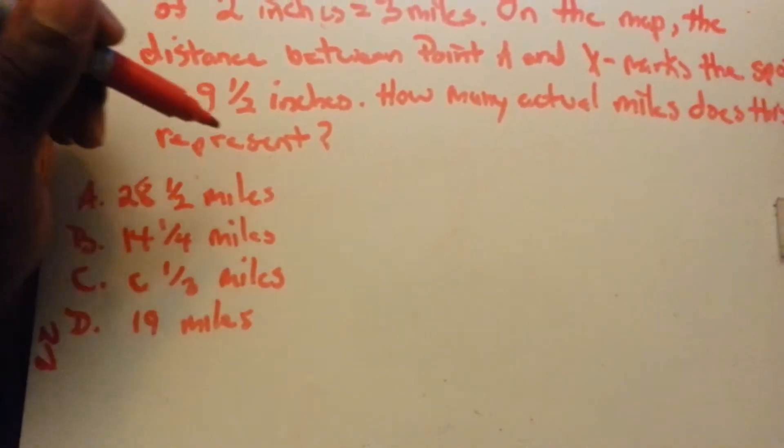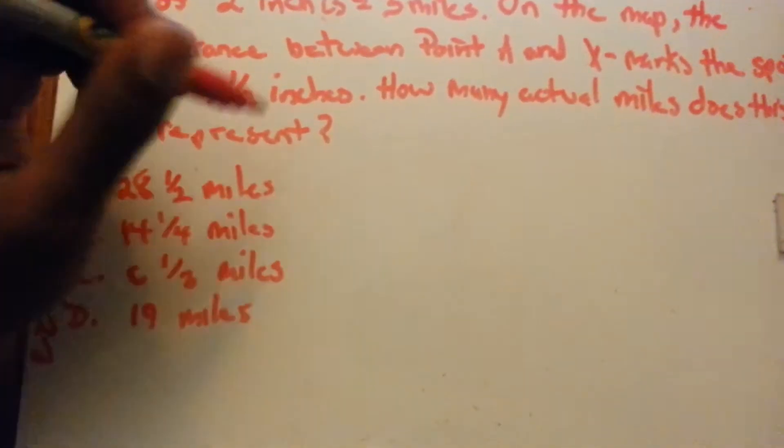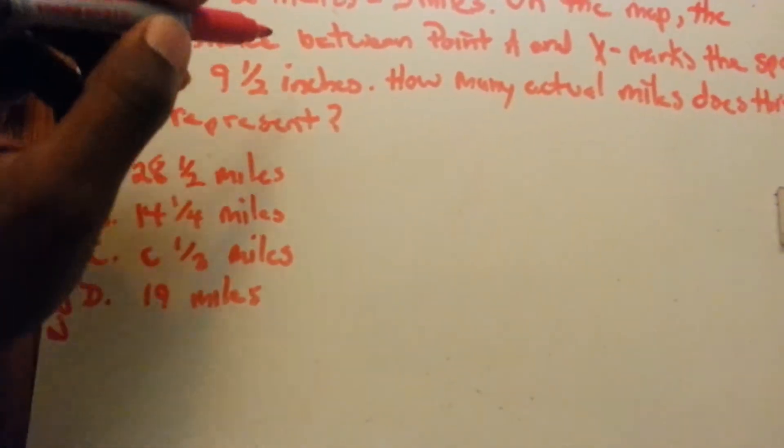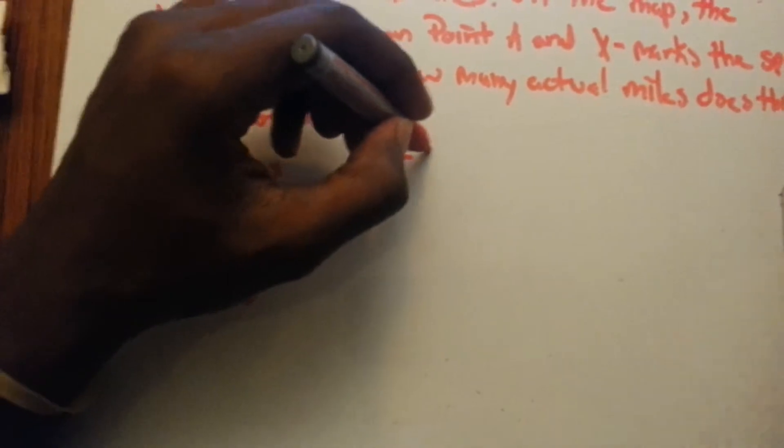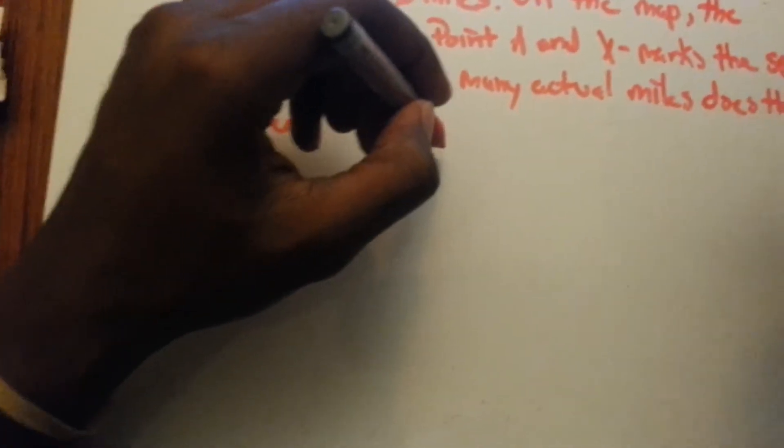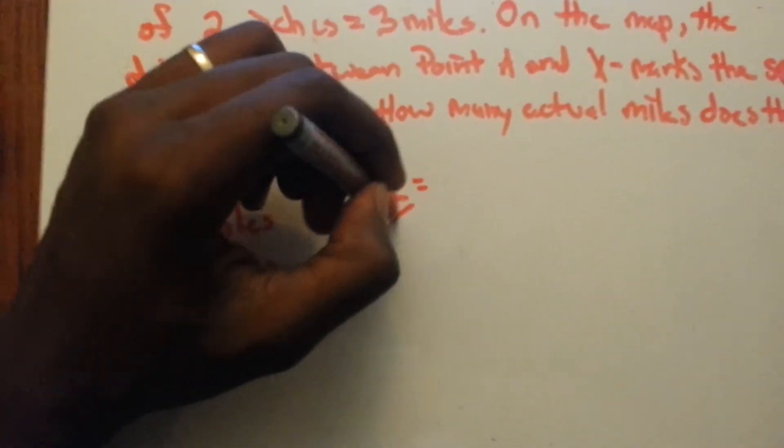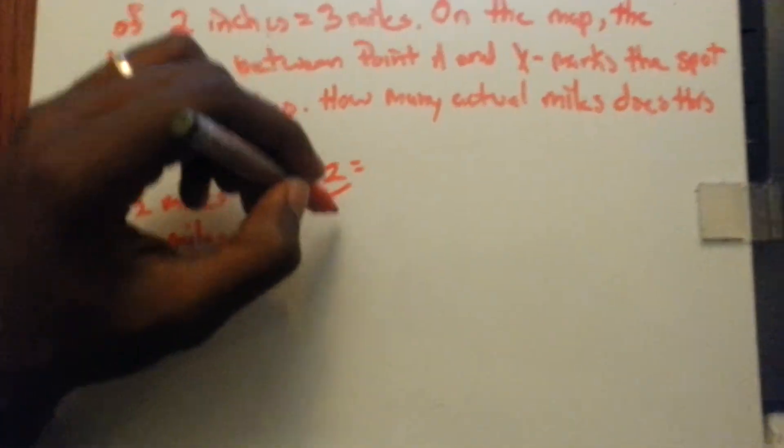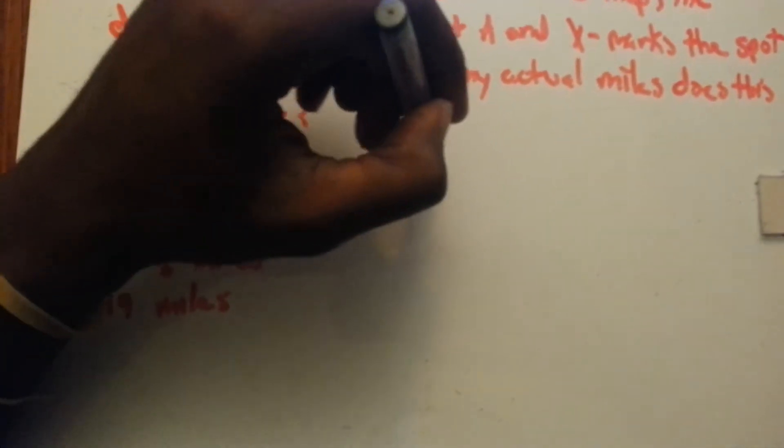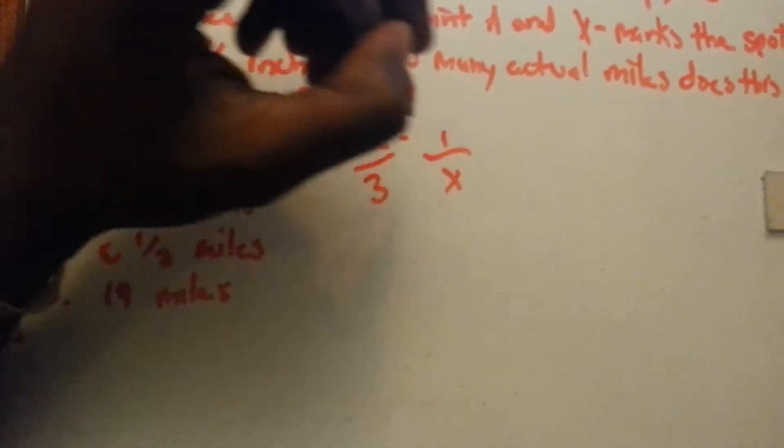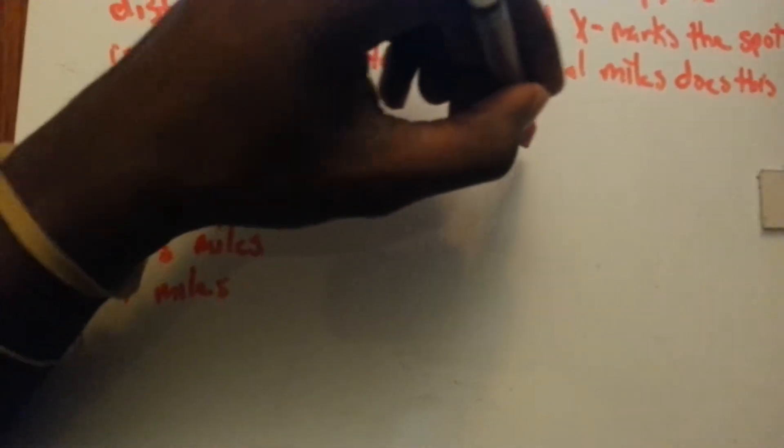So 2 inches, 2 inches equals 3 miles. 2 inches equals 3 miles. So 1 inch equals 1.5, cross multiply,